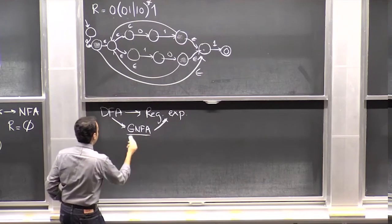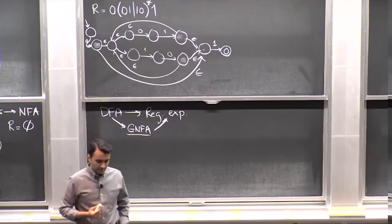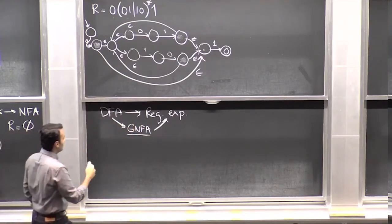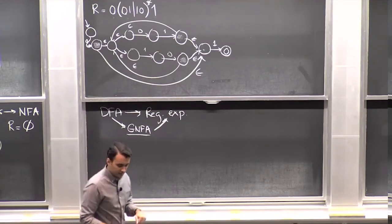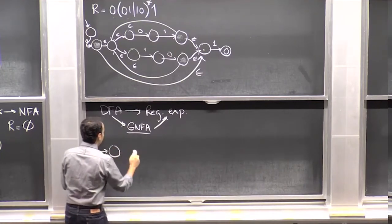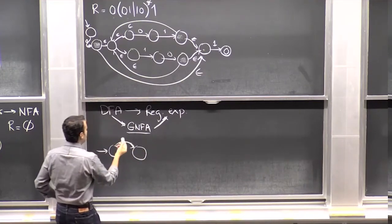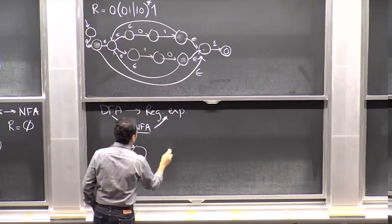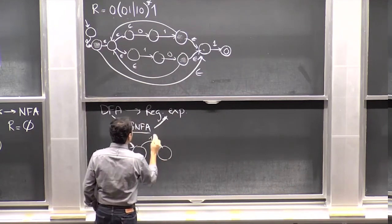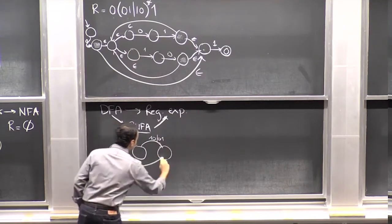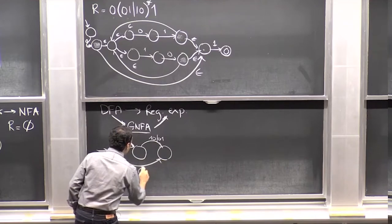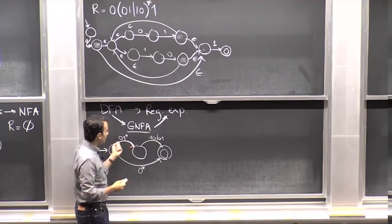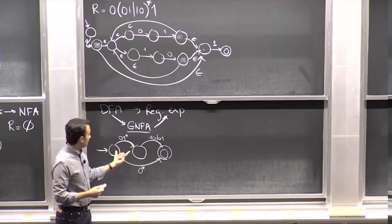A GNFA is basically an NFA with regular expressions on the edges. The transitions are not just symbols from your alphabet — you're allowed to have general regular expressions on the arrows. So something like your start state to another state can have a regular expression like zero-one-star instead of just a symbol. It's more general than a DFA because now you're allowed to put full regular expressions on the arrows.